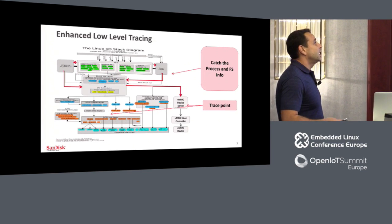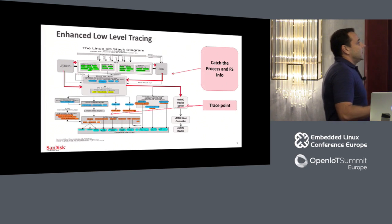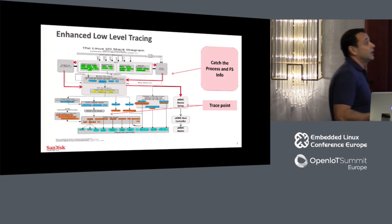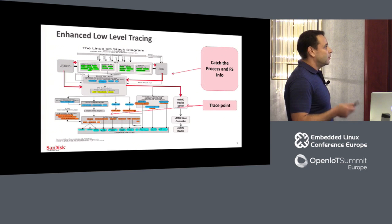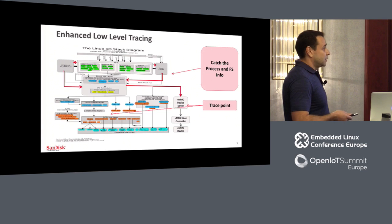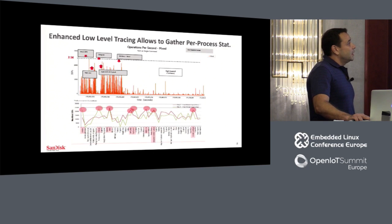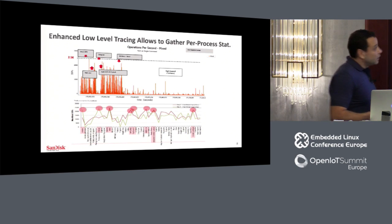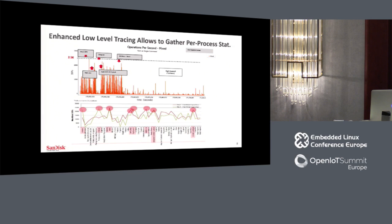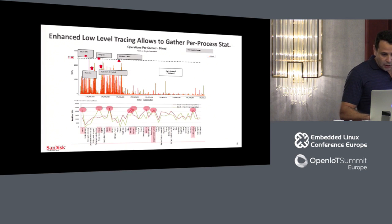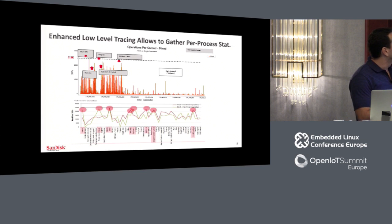In order to get those analyses, we enhanced the standard IO stack diagram. We updated it with standard tracing abilities on top of BLK trace and on top of Ftrace trace points on driver layers. We added the tracing capabilities to gather process-specific information. So we are able to get process-related information — for example, we can see what IOPS peaks happened during camera multi-shot, or another peak that happens when you install an application or download from Google Play.